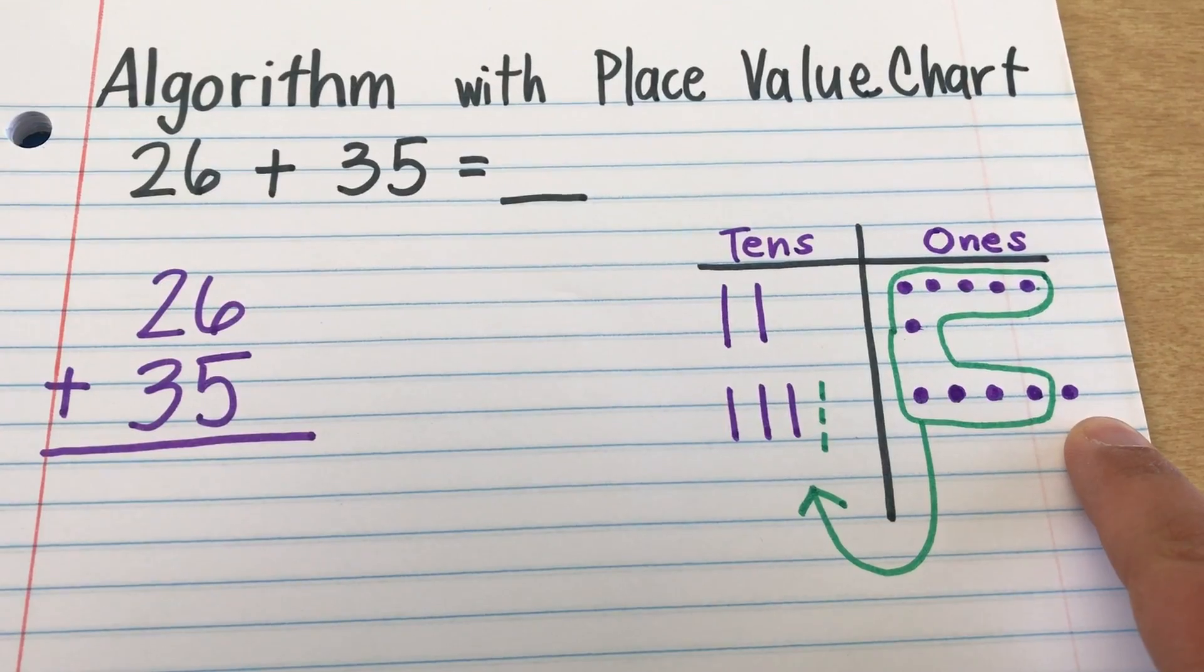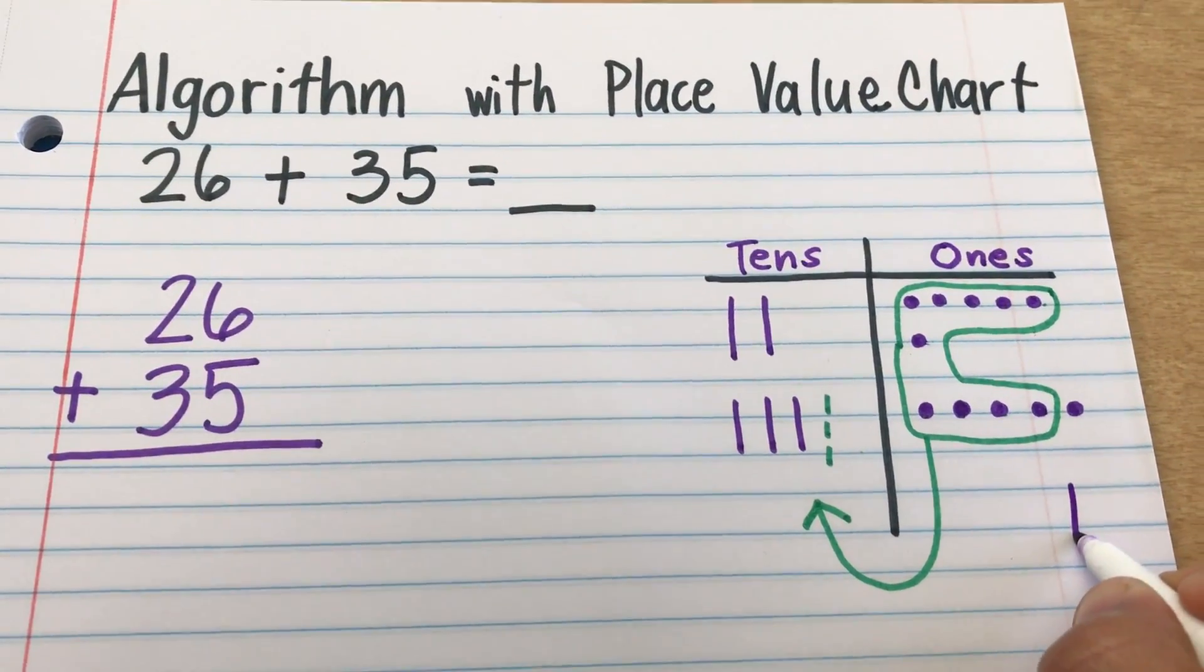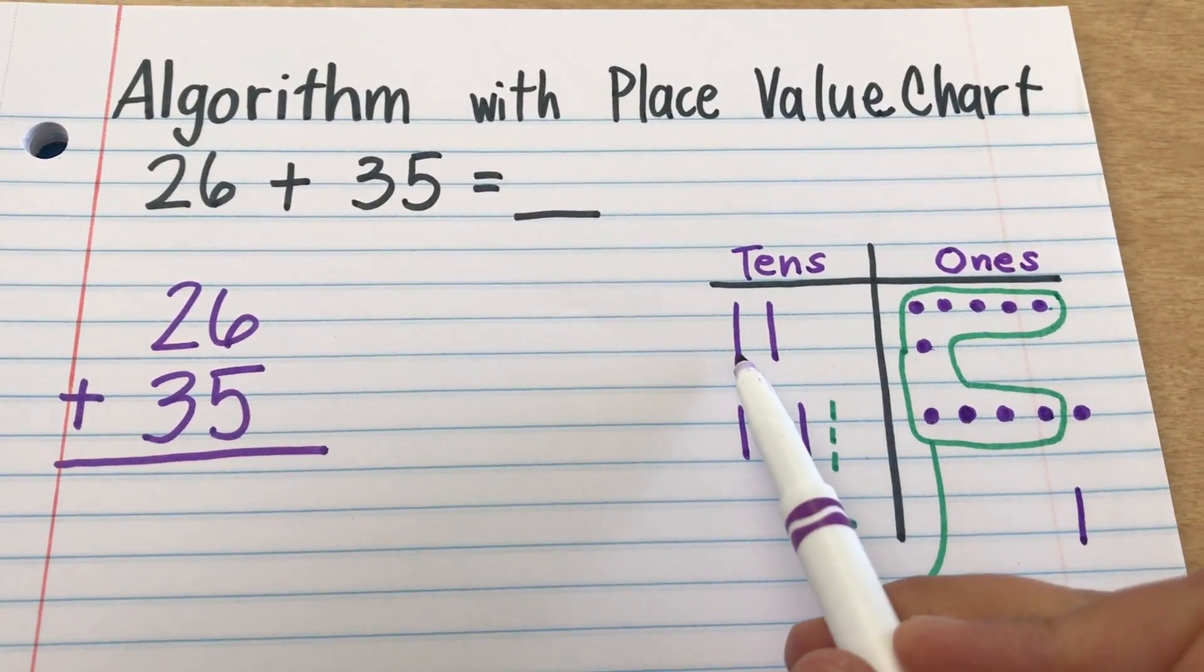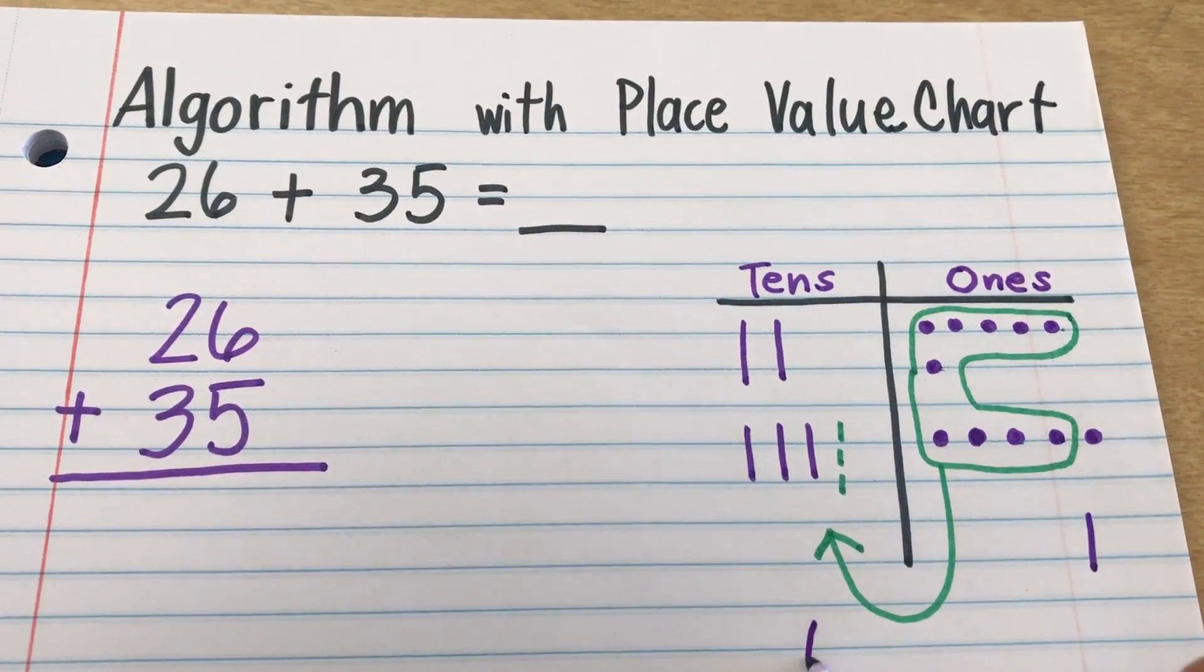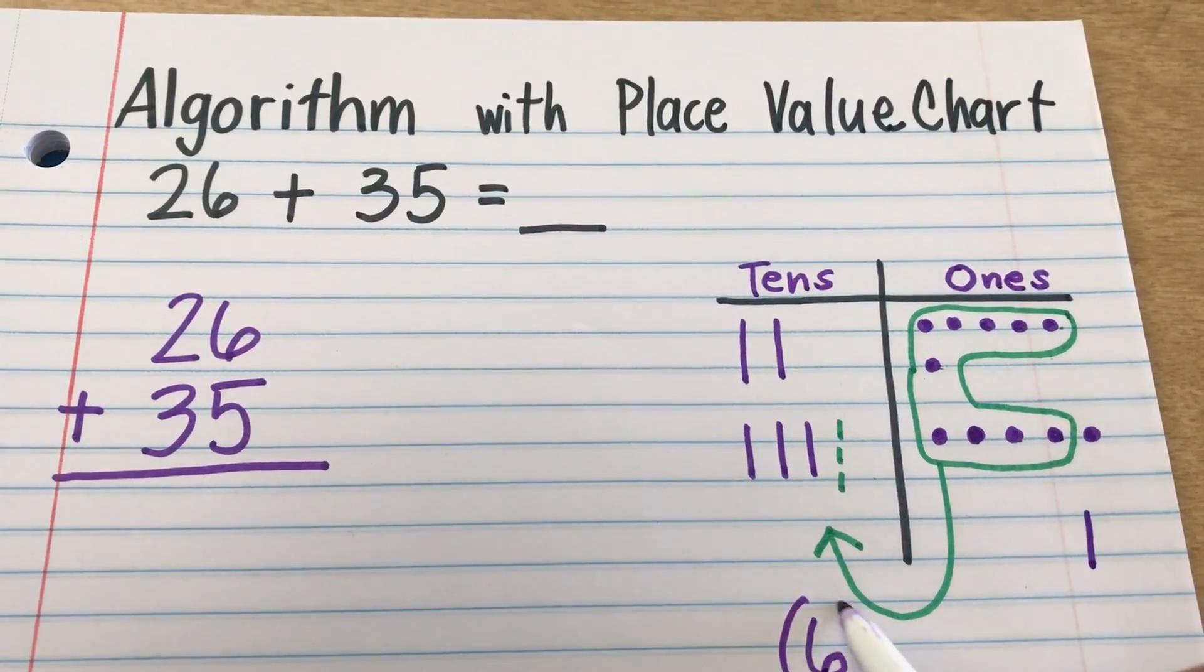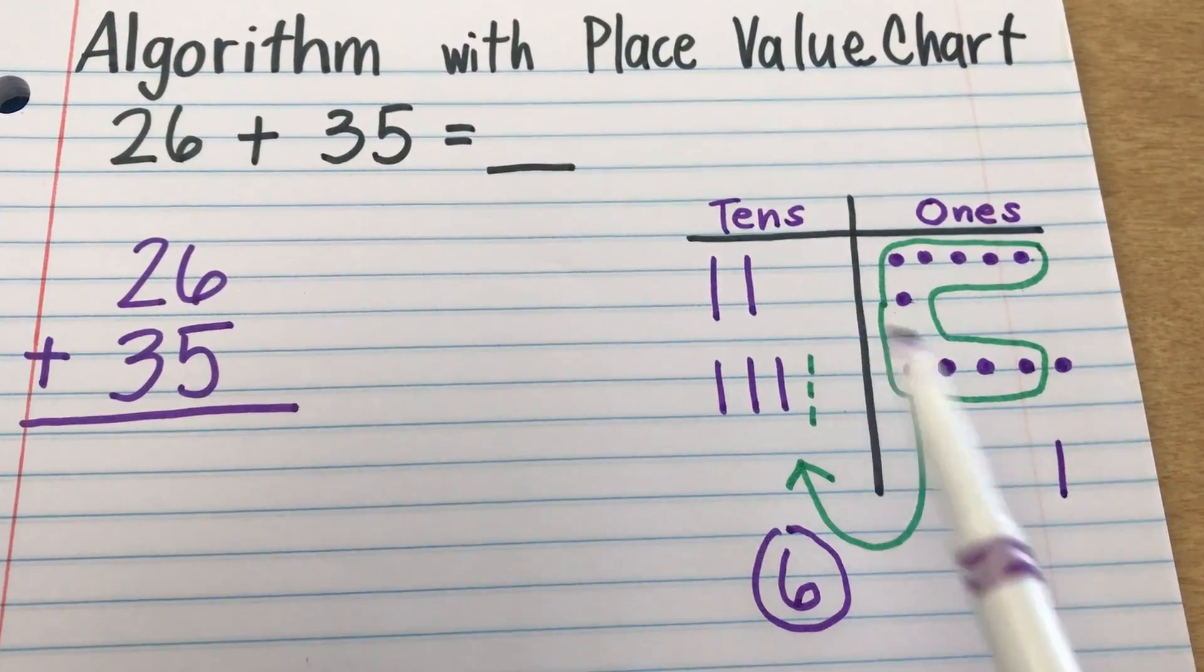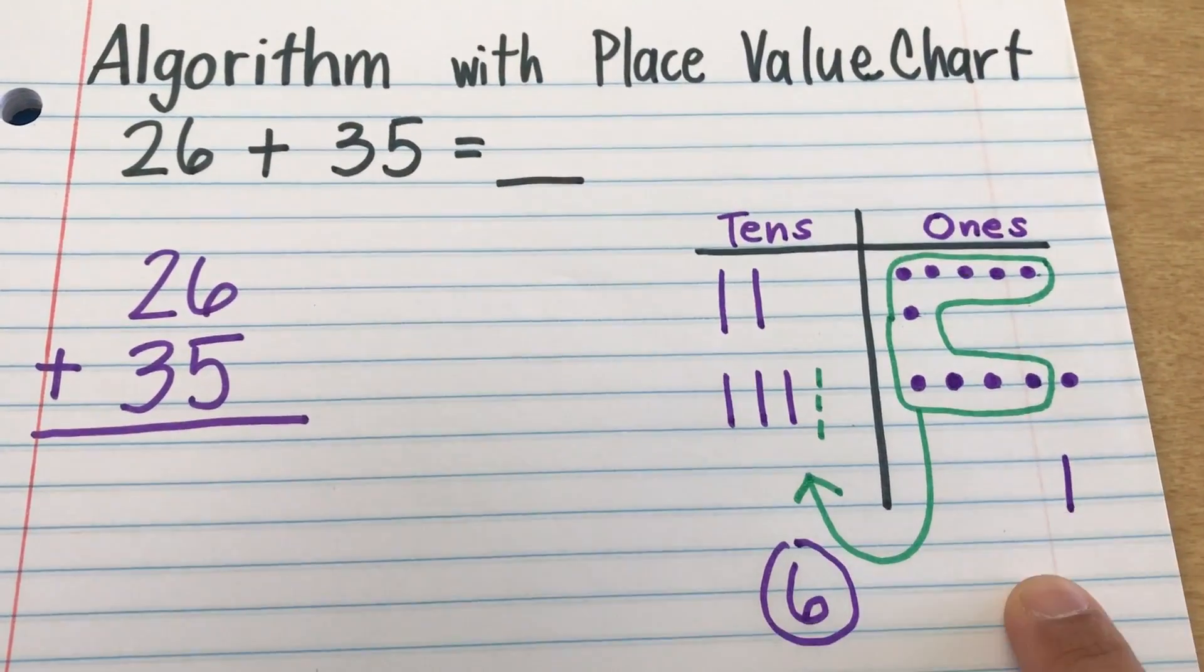So, how many is left over on the 1 side? There's 1 left over on the 1 side. How many now are on the 10 side? Let's count. 1, 2, 3, 4, 5, 6, 10s on the 10 side, which makes 60. 10, 20, 30, 40, 50, 60. So, the answer is 61 on my picture.